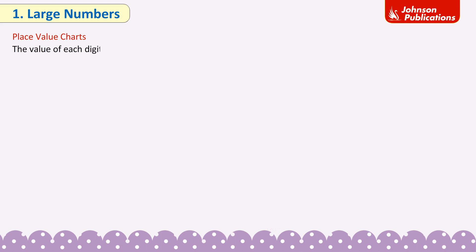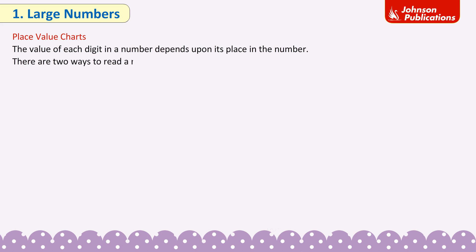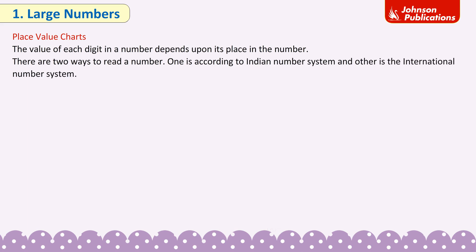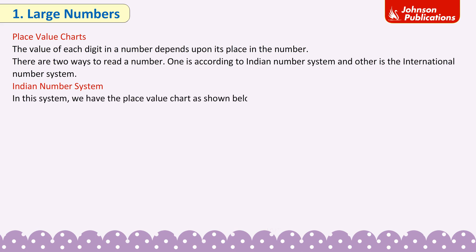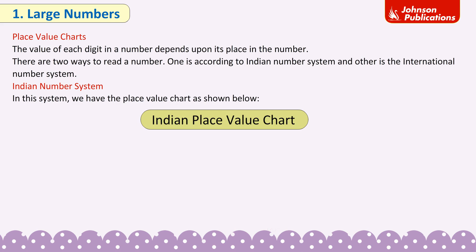Place value chart: The value of each digit in a number depends upon its place in the number. There are 2 ways to read a number — one is according to the Indian number system and the other is the international number system. In the Indian system, we have the place value chart as shown below.